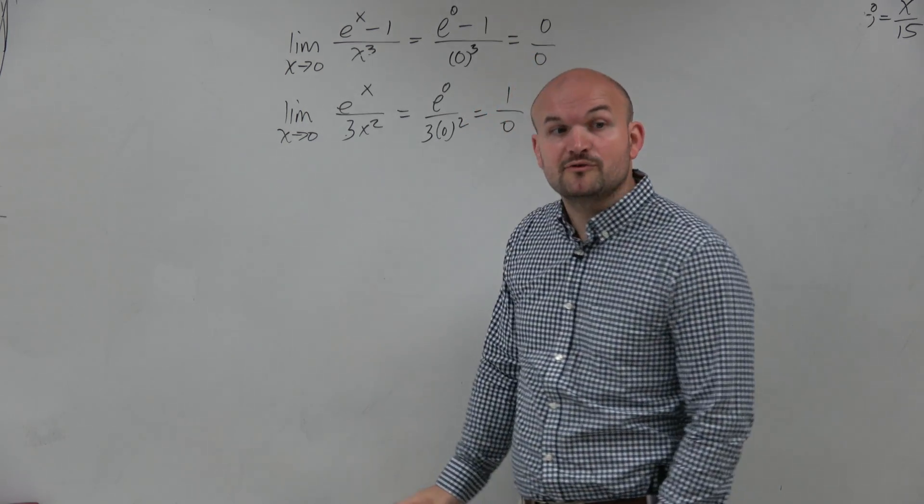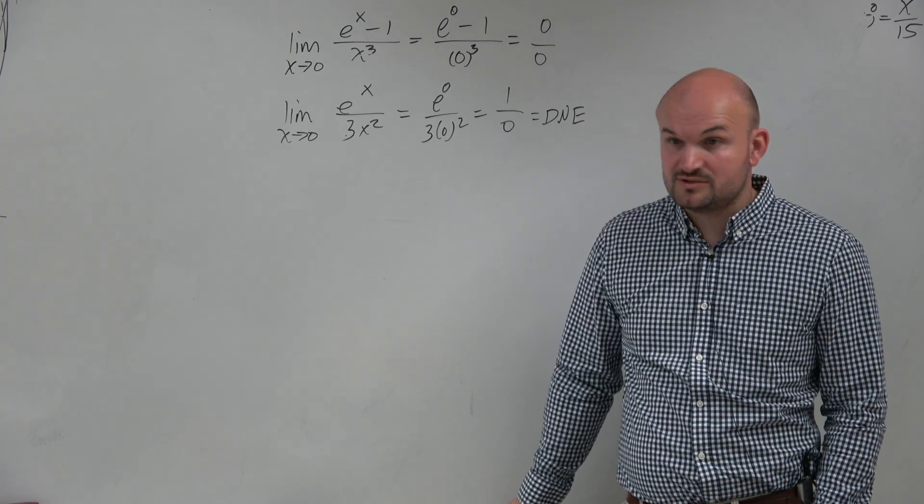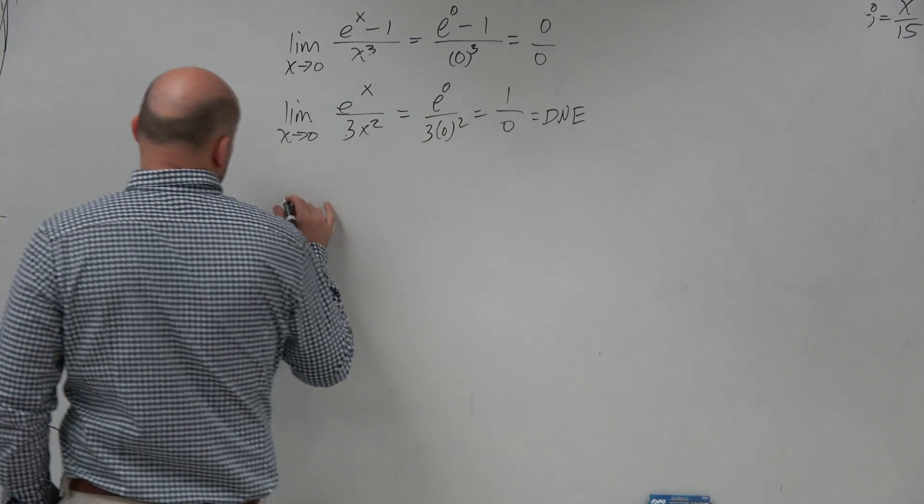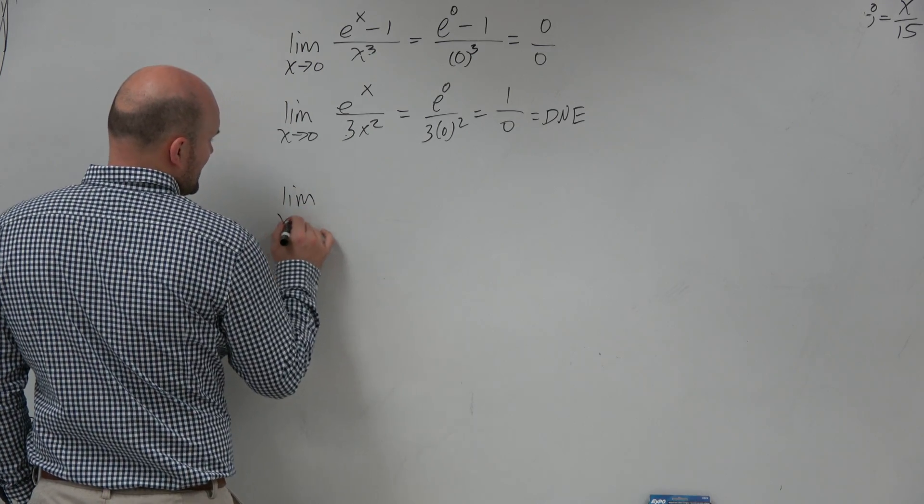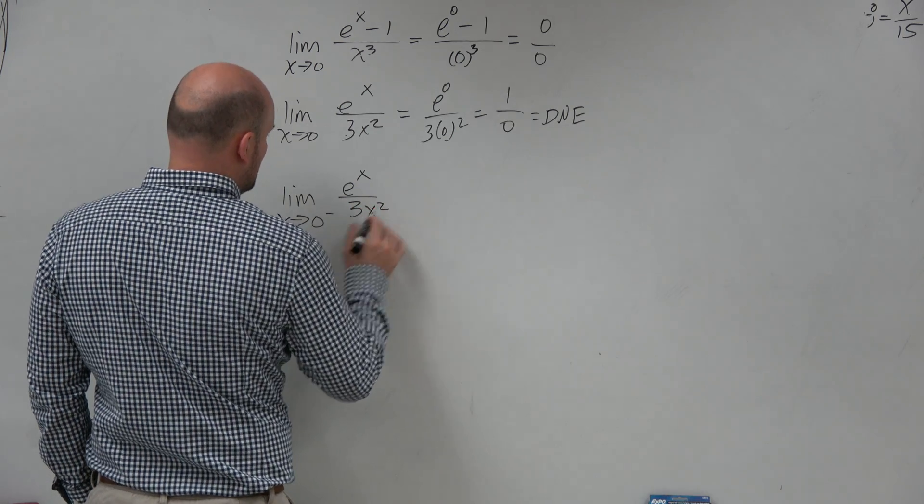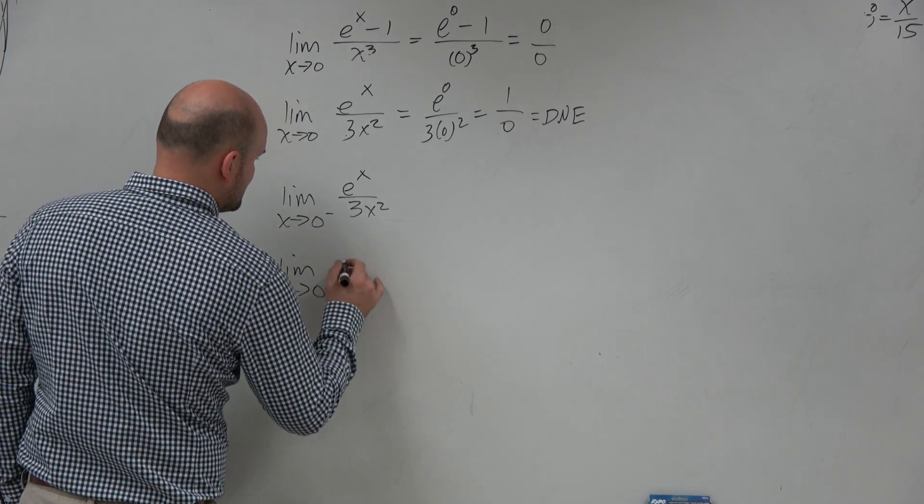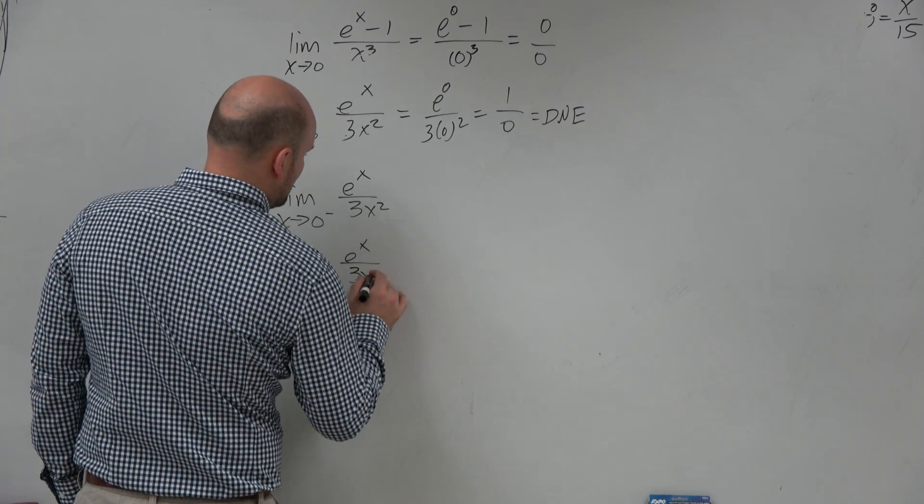So we can say that the limit does not exist. But what if we need more information? What if we wanted to determine, is it going to the left, to the right, whatever else? So therefore, we might need to find what is the limit as x approaches 0 from the left of e to the x over 3x squared? And what is the limit as x approaches 0 from the right of e to the x over 3x squared?